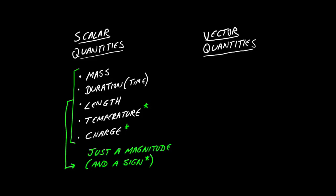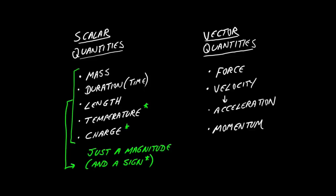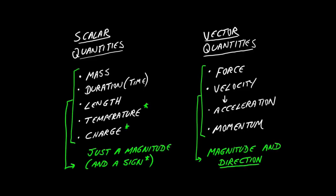What's different about vector quantities? Think about force, velocity, acceleration, or momentum. These things also have a strength or magnitude. However, they also have a direction — more than just a sign, they have a full direction in three-dimensional space. It's not enough to know that a force is three newtons; you also need to know in which direction it is applied. That is the difference between a vector and a scalar quantity.